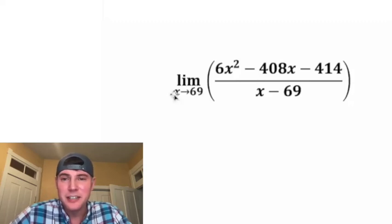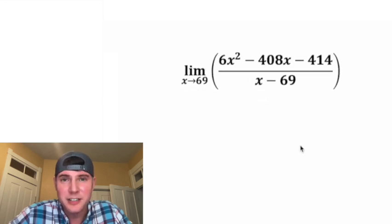Hey guys, so let's solve a limit. This is the limit as x approaches 69 of 6x squared minus 408x minus 414 over x minus 69.